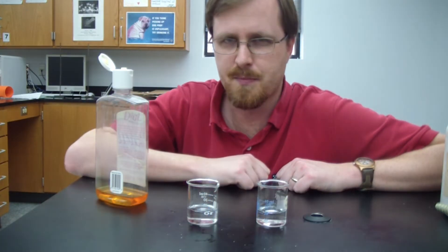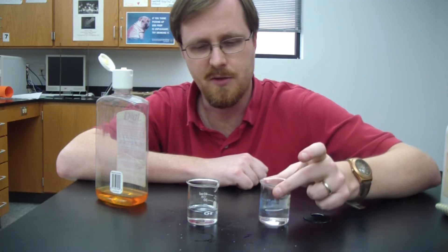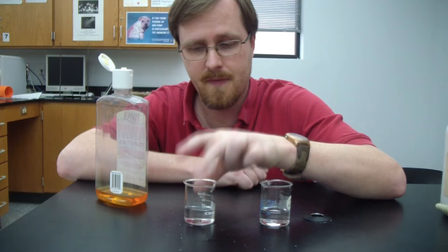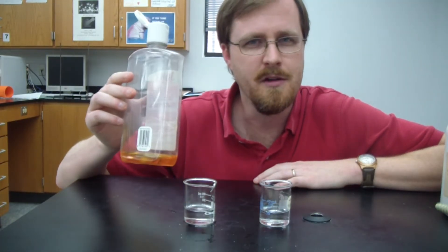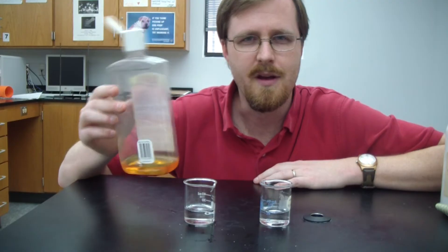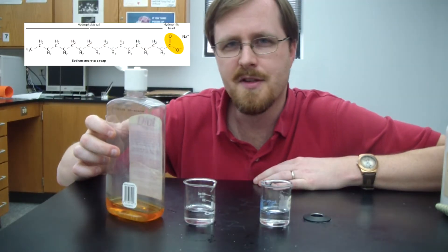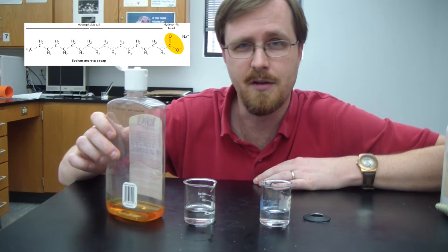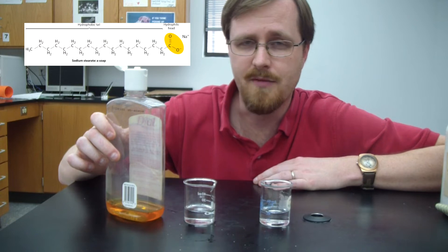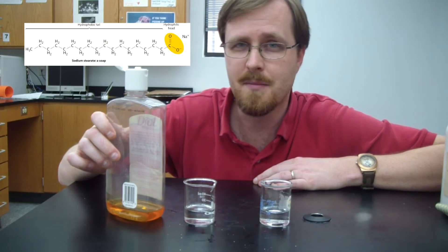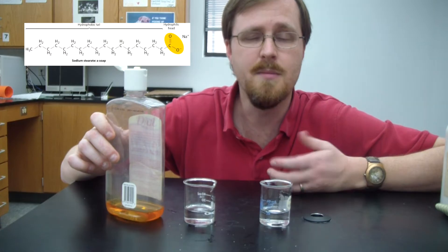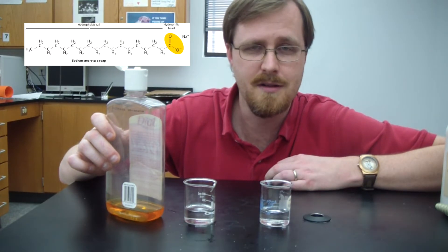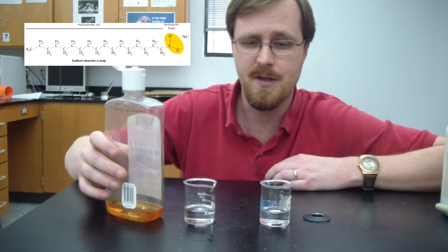Alright, so I've got two fresh beakers here. This one with distilled water and this one with lamp oil. And here, I have some regular dish soap. Now, why might this be an interesting example? Well, check out this picture right here and you can see what's going on with the soap on the molecular level. Now, on one side of it, you see those partial positive and partial negative symbols. What does that mean? Well, it means that that part of the molecule is polar and the other part is nonpolar.